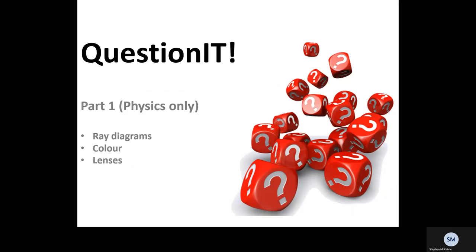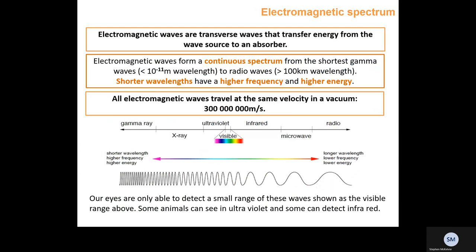Light is a type of electromagnetic wave. Now we'll look at the different types of electromagnetic waves and what we mean by electromagnetic waves. Electromagnetic waves are waves made up of an electric field and a magnetic field.